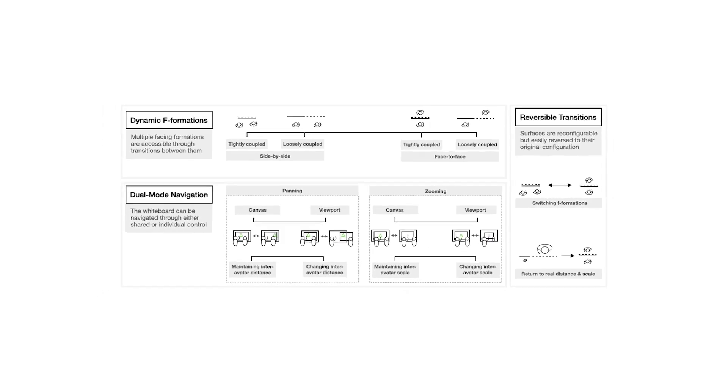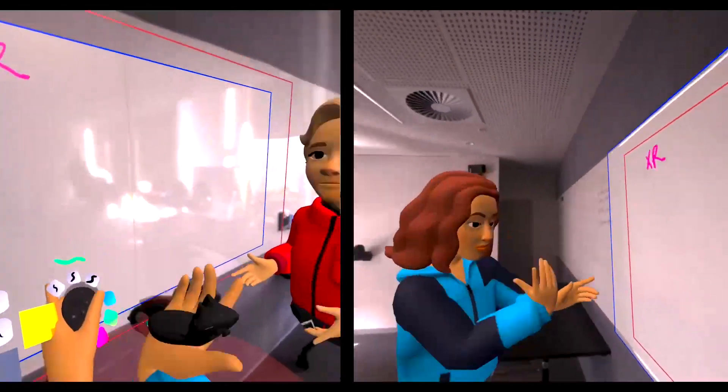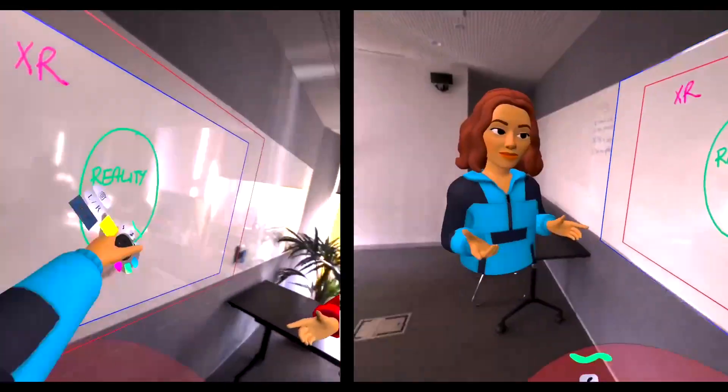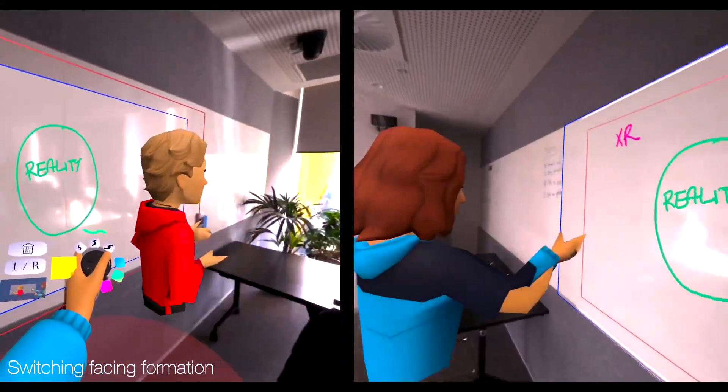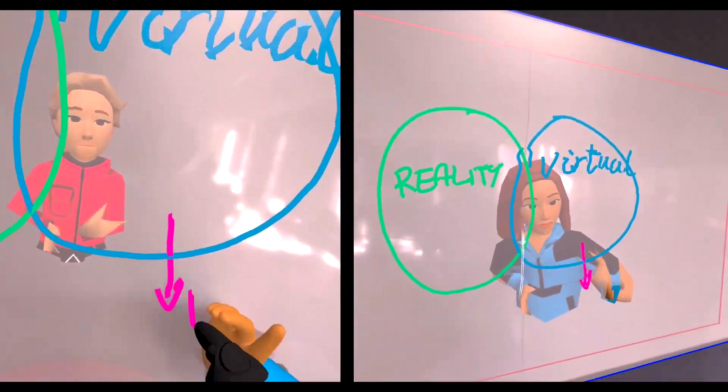The first principle is to support dynamic whiteboarding by providing multiple facing formations. With Blended Whiteboard, Alice and Bob can brainstorm while next to each other with easy attention switching between person and task. But they can also switch from working side by side to working through the whiteboard. When in front of each other, it's easier to work on the same sketch and monitor each other's actions.